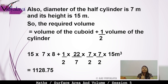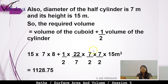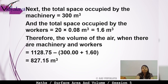Required volume = (15 × 7 × 8) + (½ × 22/7 × (7/2) × (7/2) × 15). Simplifying: 2 and 2 cancel, 7 and 7 cancel, giving 11 × 7 × 15 / (2 × 2). Adding 15 × 7 × 8, the total comes to 1128.75 m³. So the required volume is equal to 1128.75 m³.